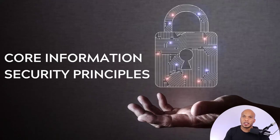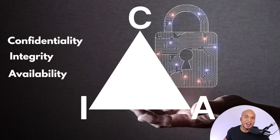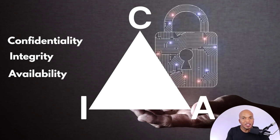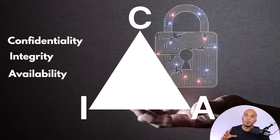Let's start off by talking about the core information security principles. These are typically referred to as the CIA triad — and we're not talking about the Central Intelligence Agency. We're talking about confidentiality, integrity, and availability. These are the three core pillars of information and cybersecurity in general.